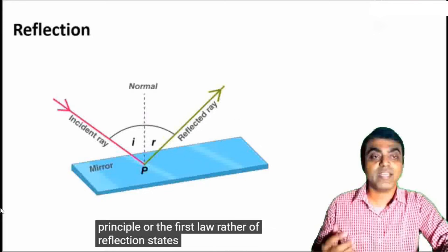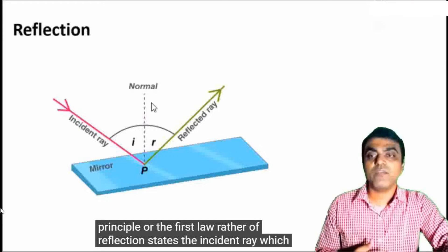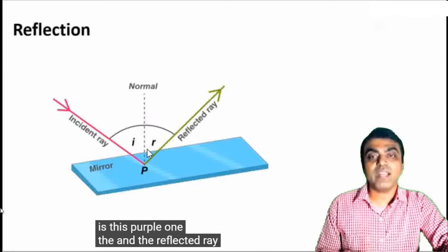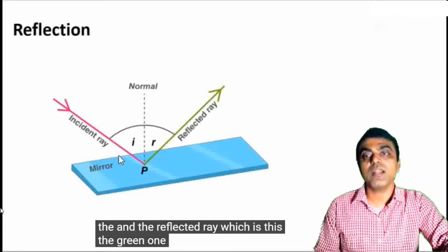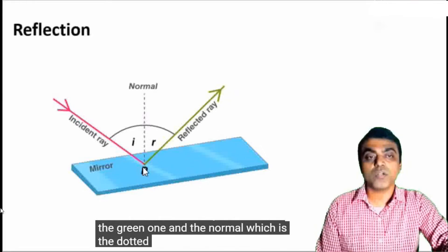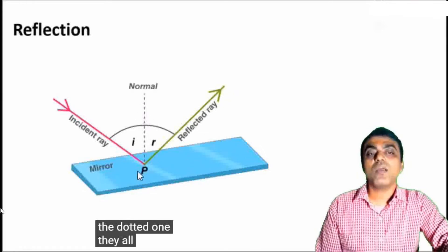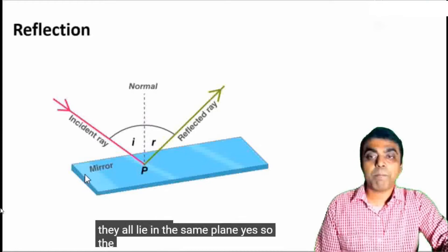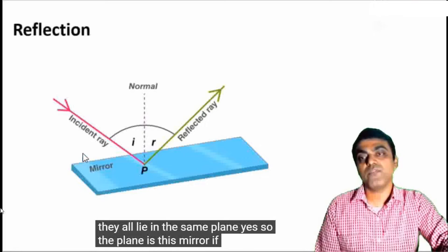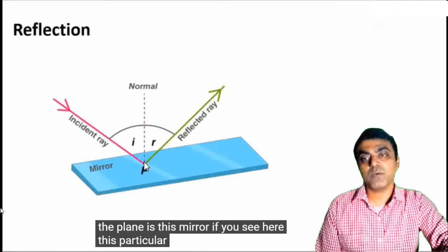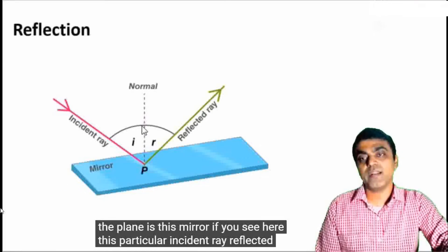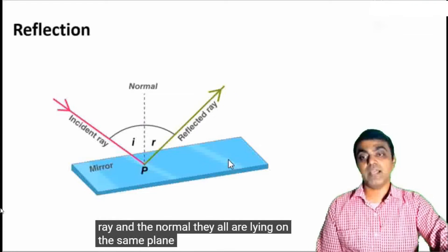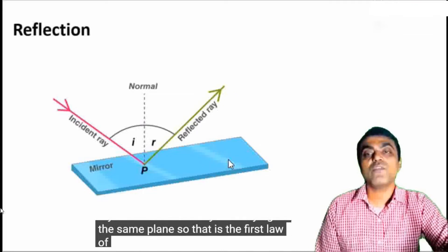So the first law of reflection states: the incident ray, which is the purple one, the reflected ray, which is the green one, and the normal, which is the dotted line, they all lie in the same plane. If you see, this particular incident ray, reflected ray, and the normal are all lying on the same plane. So that is the first law of reflection.